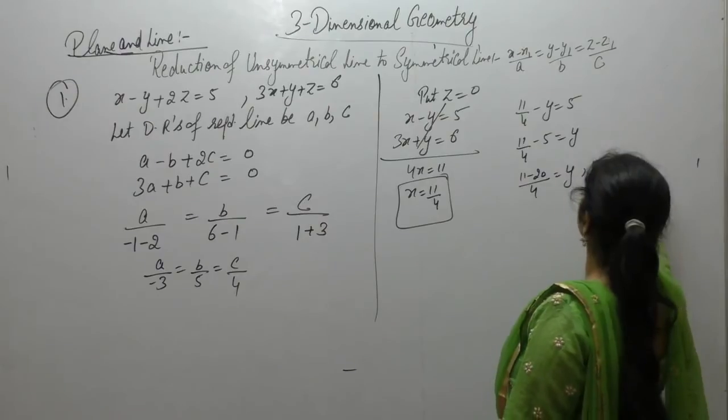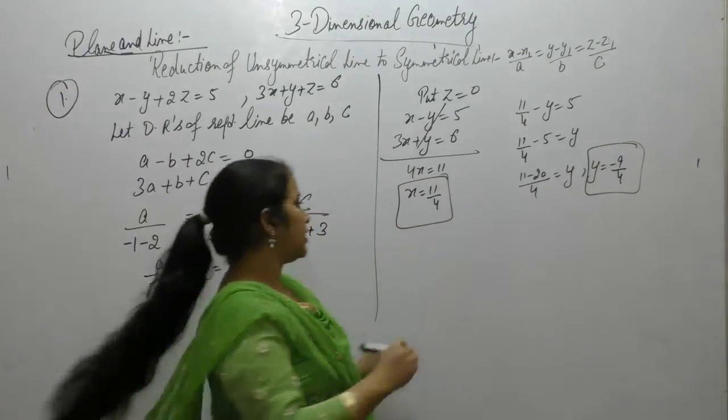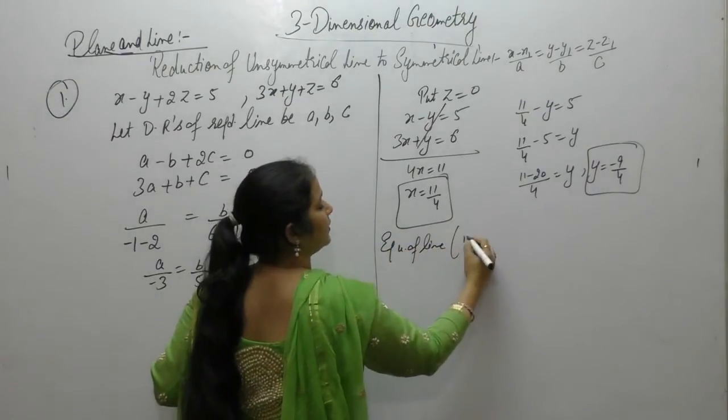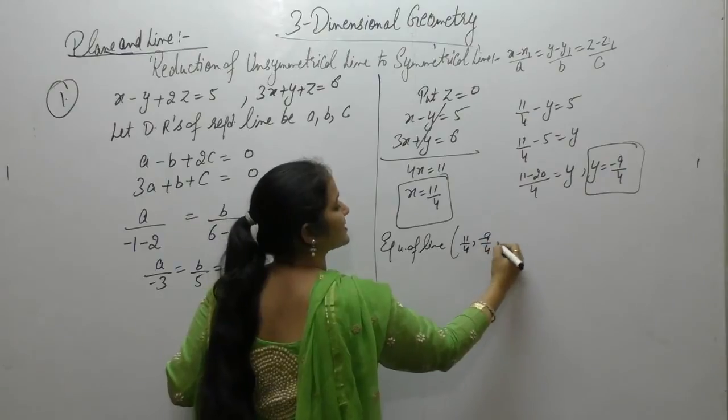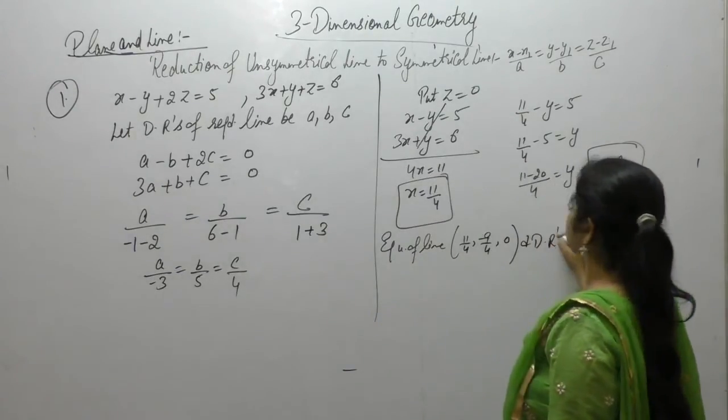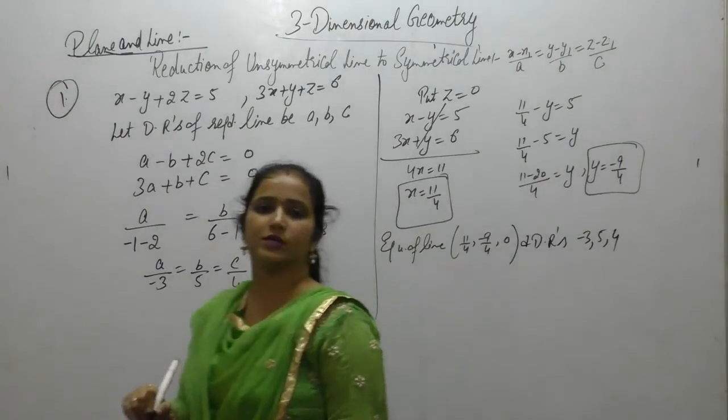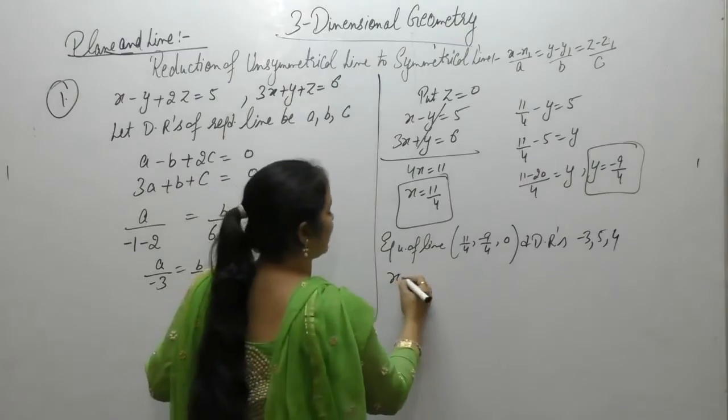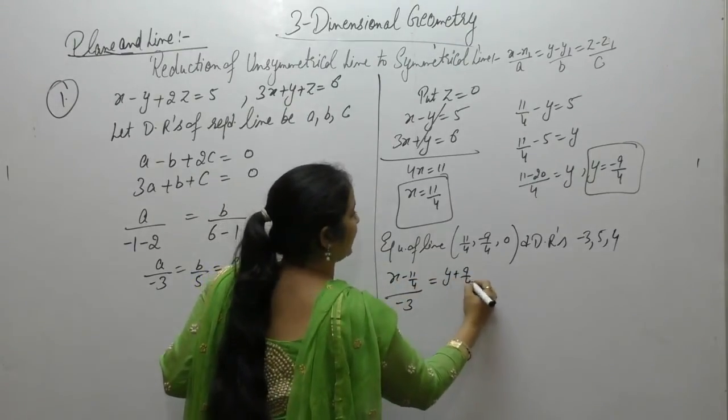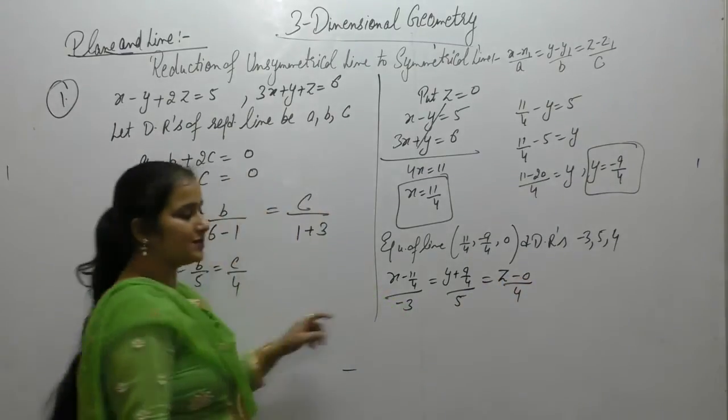So, we get y as minus 9 by 4. Now, the equation of line will be pass through 11 by 4 minus 9 by 4, 0 and direction ratios as minus 3, 5 and 4. So, equation of line x minus x1 upon A, y minus y1 upon B, z minus z1 upon C.